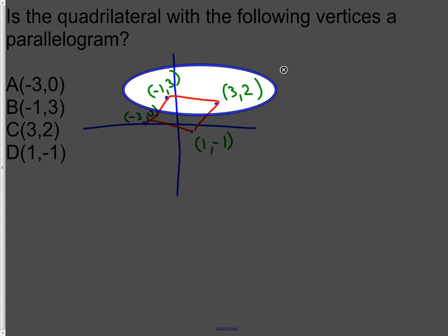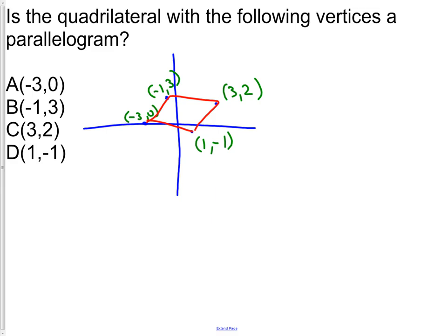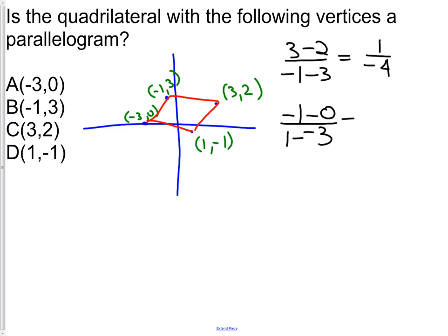I'll also check the distance to see if the two sides are the same length. To find slope, I take (y₂ − y₁) over (x₂ − x₁). For the top side, I get 1 over negative 4. For the bottom side, I compute negative 1 minus 0 over 1 minus negative 3, which gives negative 1 over 4. These two fractions are equivalent, so we know those lines are parallel.